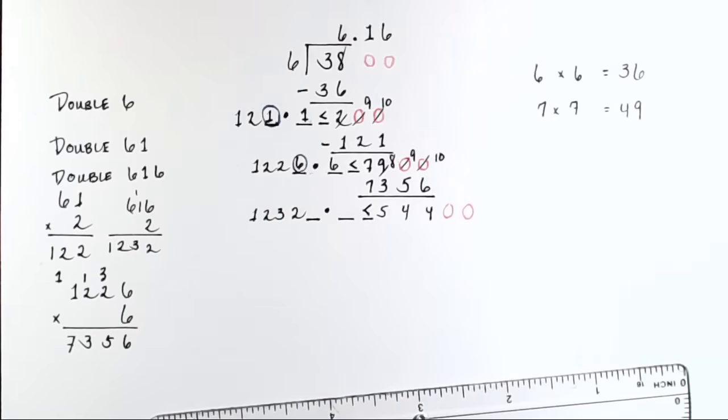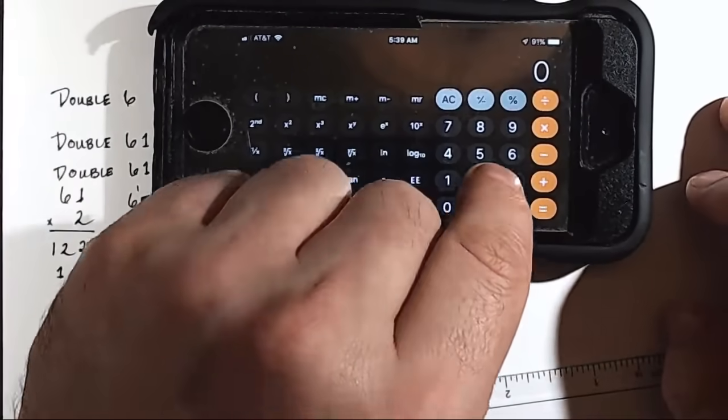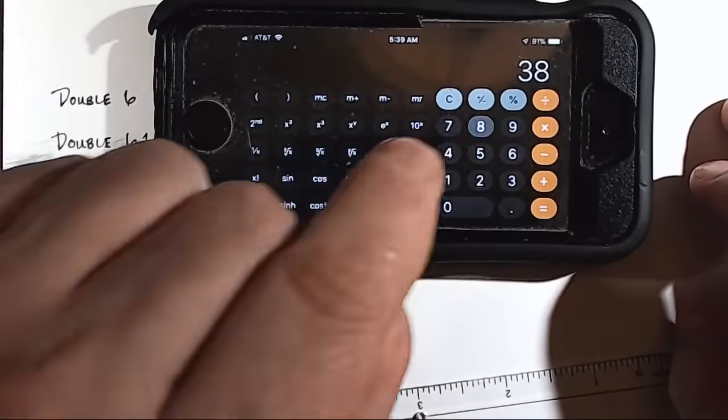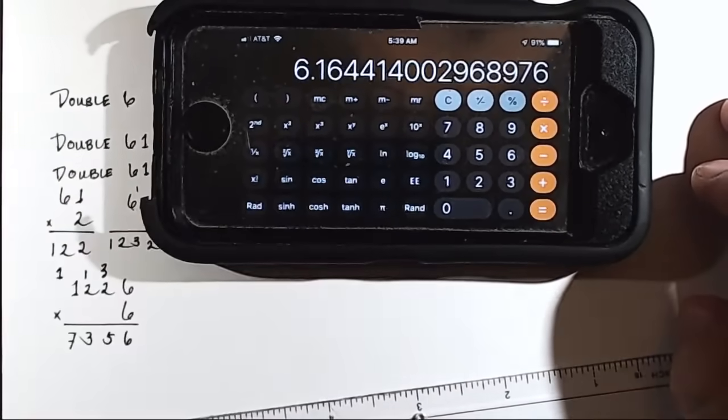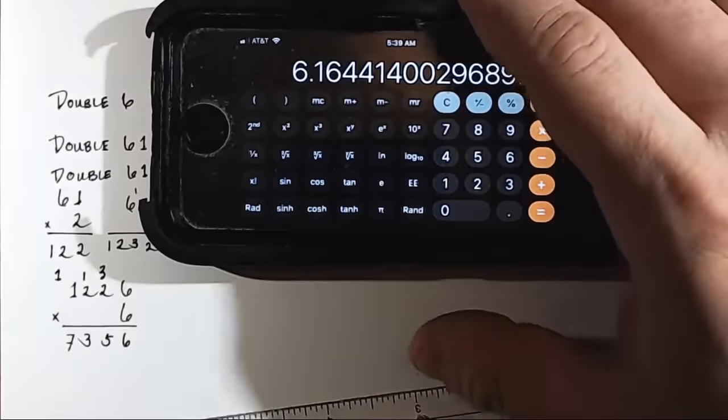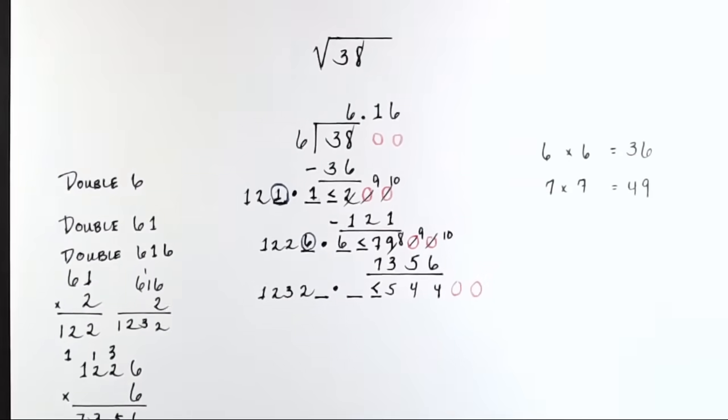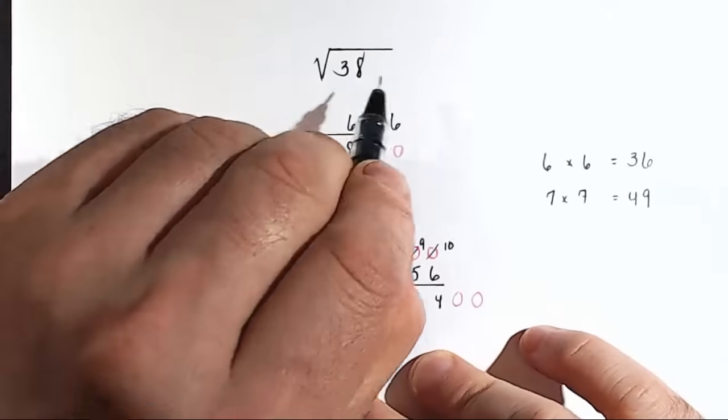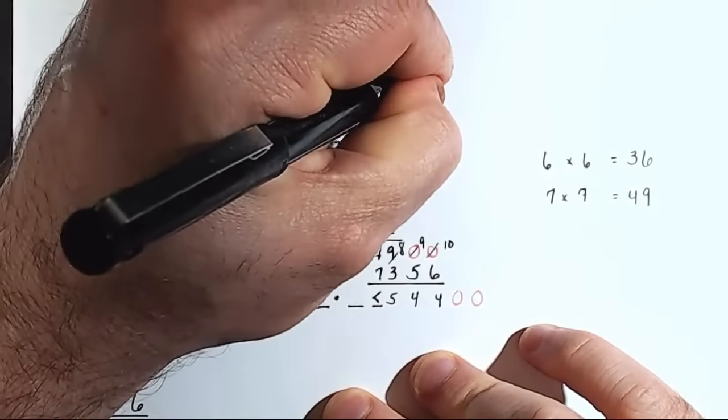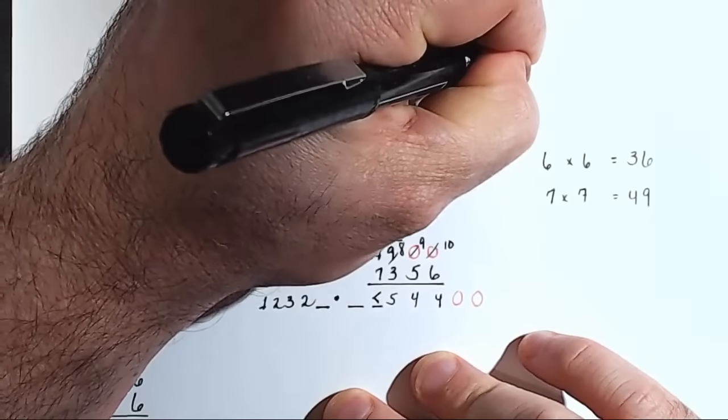If we take our calculator here, and we put in 38, and then we take the square root, we see that we got it right. It's 6.16. So that's how we would take a square root entirely by hand. So we can say the square root of 38 is approximately equal to 6.16.